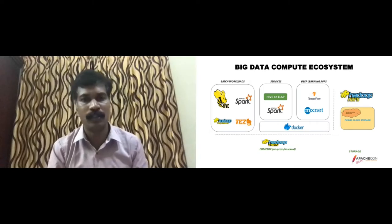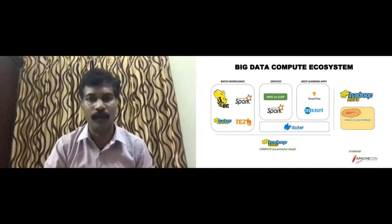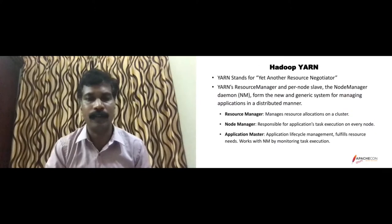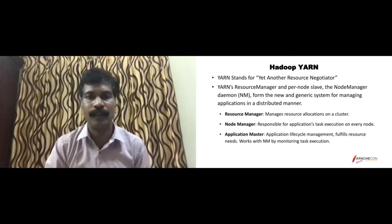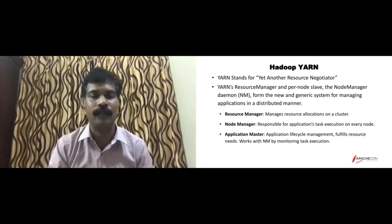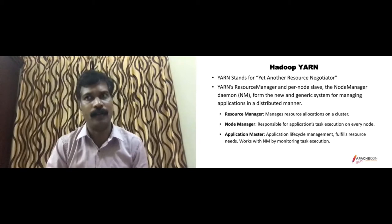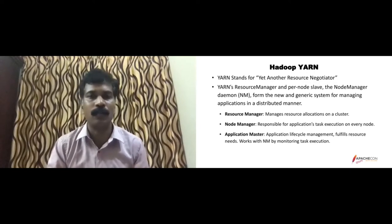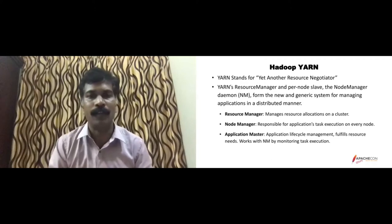This is how I want to position the entire compute ecosystem as of today. Let's look at YARN — YARN stands for Yet Another Resource Negotiator, right from the day it started. YARN is a distributed computing ecosystem where you have a master and a bunch of slaves. Each slave is called a node manager, running on each node. Resource management happens effectively with the master called Resource Manager and the node managers as slaves.